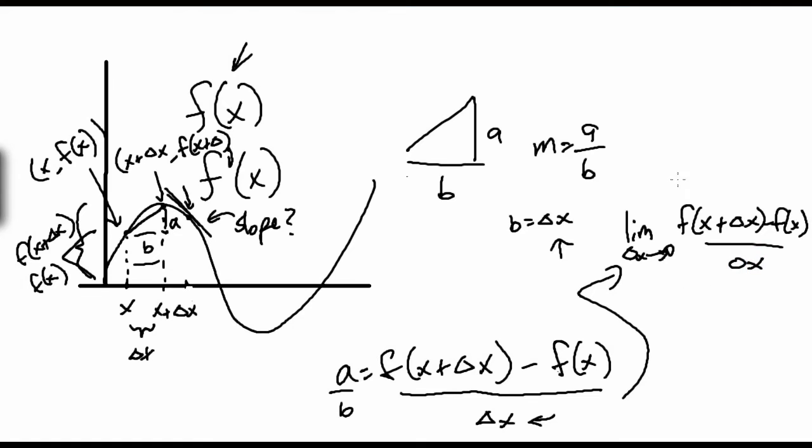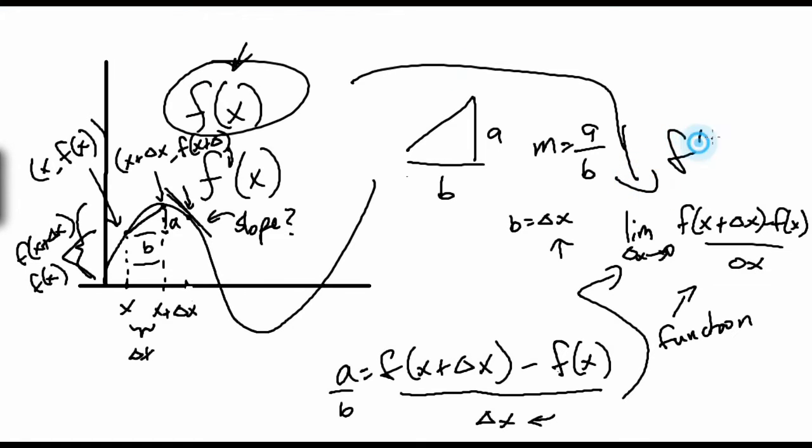f(x plus delta x) minus f(x) over delta x. And this function, this will give a function. This is a function. This will, put in a function, given this function right here. This right here is f prime of x. This right here is f prime of x, okay? This is f prime of x. It's, this is the derivative. This is what we call a derivative.